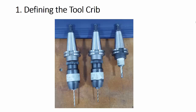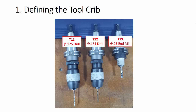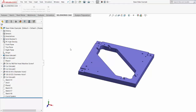So now let's talk about each step in more detail: defining the tool crib. In the MakerLab, I have set up these three tools that we'll use to machine the base of the 3D printer. Tool 11 is an eighth-inch diameter drill bit. Tool 12 is a number 20 drill bit, which is a .161 inch diameter. Tool 13 is a quarter-inch flat end mill.